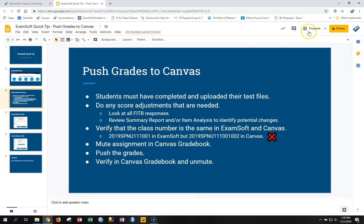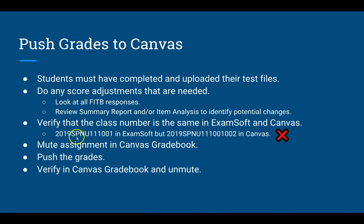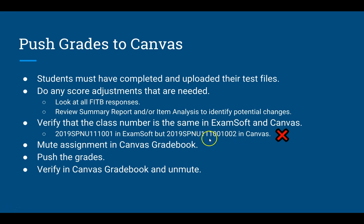In Canvas, you can have multiple sections in one Canvas shell. For example, in ExamSoft you might have a class that looks like 2019 SBNU 111 section 001, but in Canvas you have section 001 and 002 set up in the same Canvas shell. You won't be able to push grades from that ExamSoft class to that Canvas class because the systems won't understand they're the same class. You would need either a two-section class set up in ExamSoft, or separate Canvas shells for section 001 and 002.